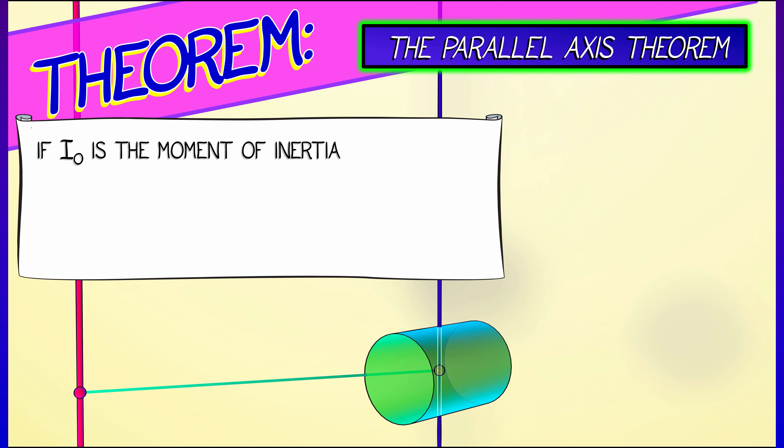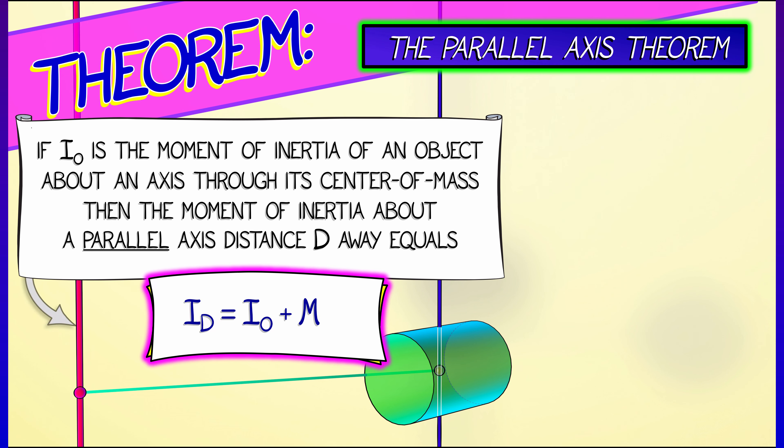Well, let's say that I0, I sub zero, is the moment of inertia about the center of mass. Then, to get the moment of inertia about a parallel axis, a distance d away, you compute that as I0 plus md squared, where m is the mass of the body that you're working with.